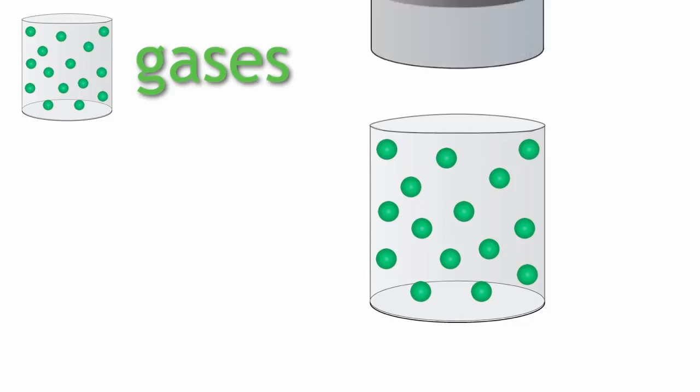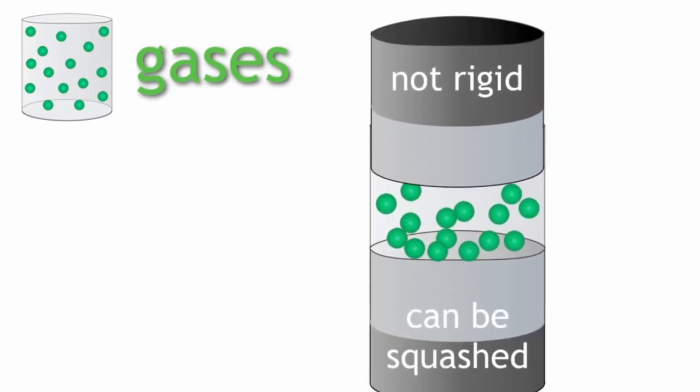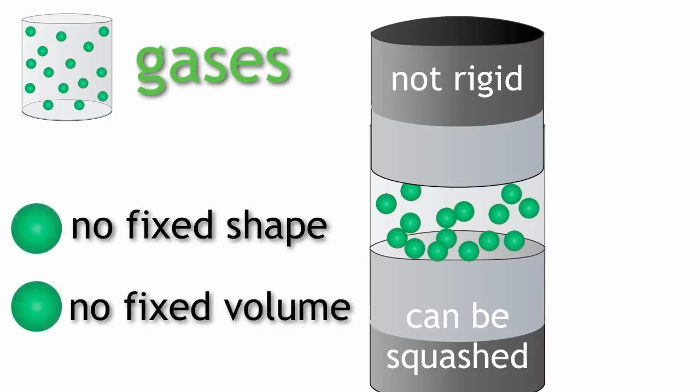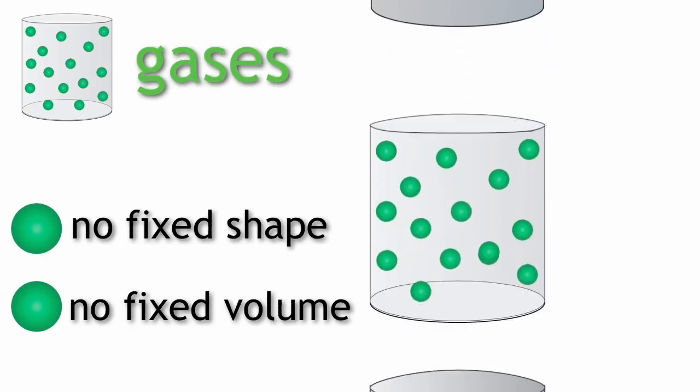As a result, gases are not rigid and can be squashed or compressed. They do not have a fixed shape nor fixed volume. They fill the whole space they are in.